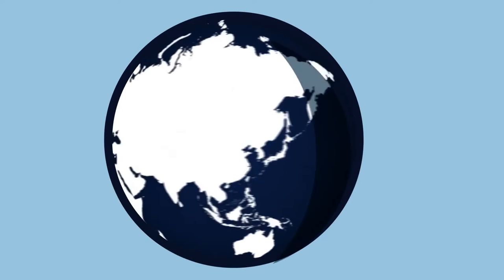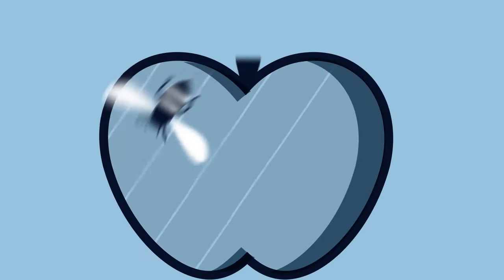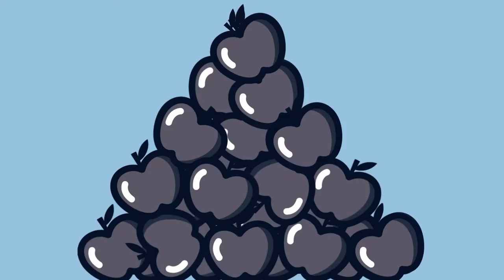We share our world with over a million different insect species. Most insects do us no harm — they're a vital part of our ecosystem. They're food for other animals, they help recycle dead things, and many plants can't reproduce without insects to pollinate them. Imagine a world with no fruit.